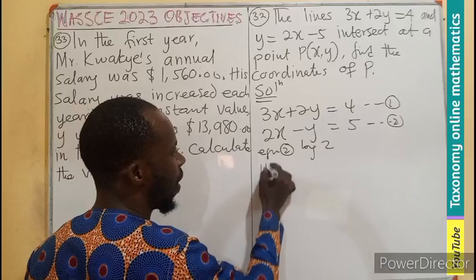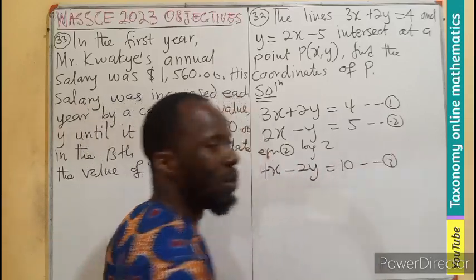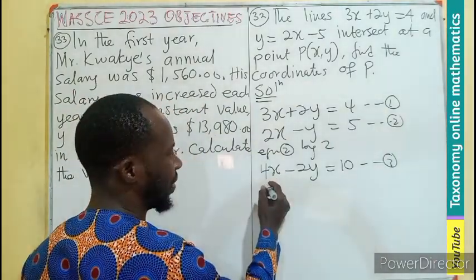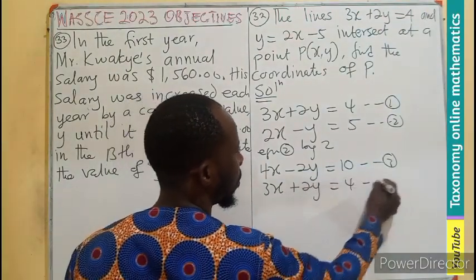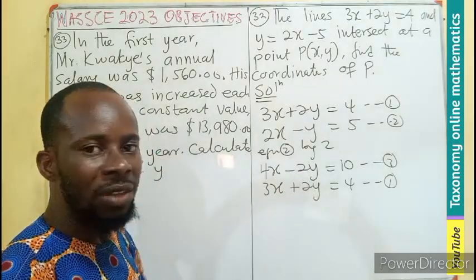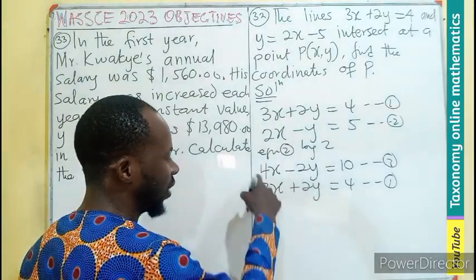Meaning, equation 2 by 2. That will be 4x - 2y = 10. That becomes equation 3. So I am solving equation 3 and equation 1 simultaneously. What do I do? I will only add because I want to eliminate y. So add equation 1 plus equation 3.